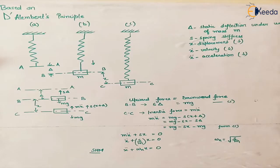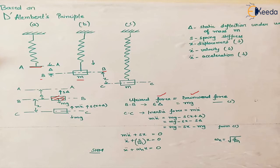Let's assume there is a helical spring fixed at one end and free at the other. Its equilibrium position is AA. If we attach a mass m at the end of this spring, it will undergo a certain deflection and attain a new equilibrium position, denoted BB. Applying D'Alembert's principle at this equilibrium position, the upward force equals the downward force. The downward force is the weight mg, and the upward force is the restoring force S·δ, where S is spring stiffness and δ is the deflection. So mg = S·δ — let this be equation one.